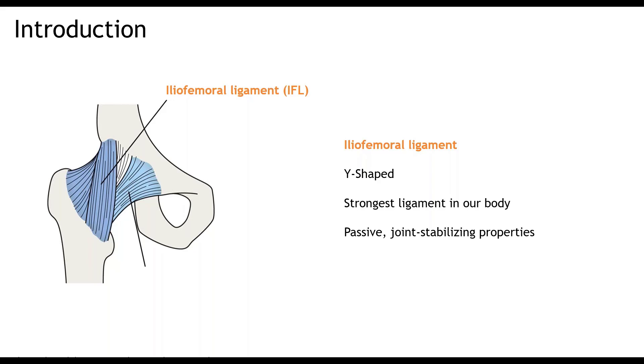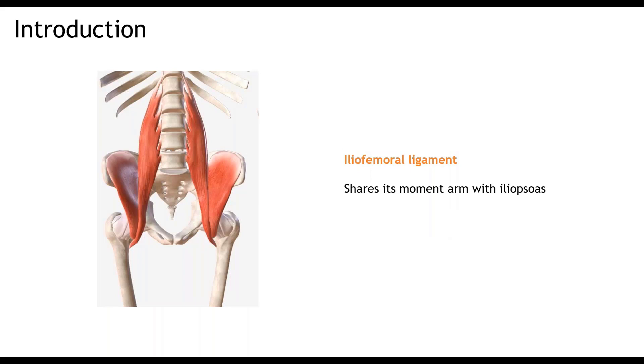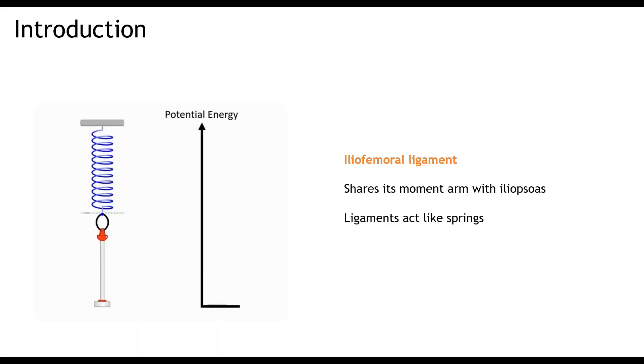Nevertheless, literature mainly focuses on the passive joint stabilizing properties of the IFL. If we look more closely to the muscles around the hip, we can see something interesting. The IFL shares its moment arm with the iliopsoas, the most important hip flexor. This is captivating as we know that a ligament acts like a spring. When springs are extended, potential energy is stored in the spring. When the spring is released again, the potential energy is released as well. For the IFL, this means that when the hip is extended, potential energy is stored in the IFL. When the leg is brought back forward, the energy can be released again.